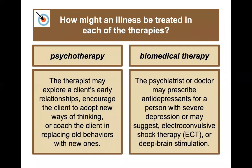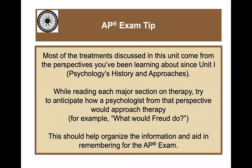How might an illness be treated by each? In psychotherapy, the therapist may explore a client's early relationships, encourage the client to adopt new ways of thinking, or coach the client in replacing old behaviors with new ones. With biomedical therapy, a psychiatrist or medical doctor may prescribe antidepressants for severe depression, or suggest techniques like ECT — electroconvulsive shock therapy — or deep brain stimulation. An AP exam tip: most treatments discussed in this unit come from the perspectives introduced in Unit 1, psychology's history and approaches.